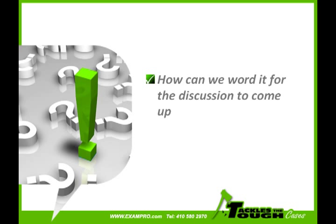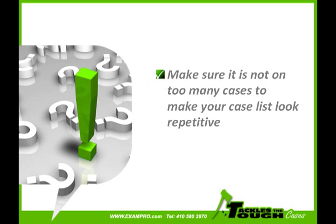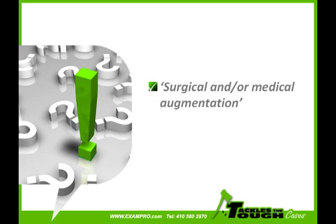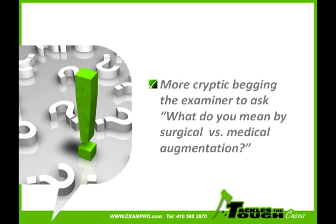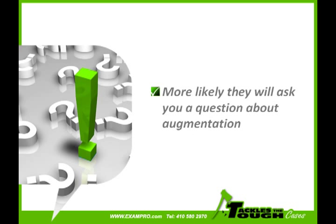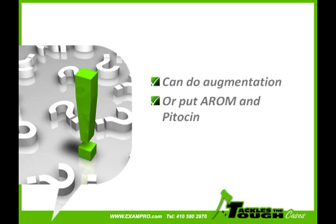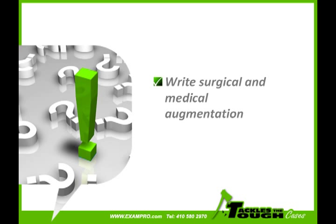Maybe you should put down — as long as it's not on too many cases, making them highly repetitive — surgical augmentation, or surgical and medical augmentation, or in one case only medical augmentation. It's a little more cryptic and it's almost begging the examiner to ask what you mean by surgical versus medical augmentation. You're making it more cryptic, which makes it moderately more likely they'll actually ask you a question on augmentation. You can just write augmentation, or mention AROM and Pitocin, but I would tend to say surgical and medical augmentation — it's more intriguing to the examiners reading your case list.